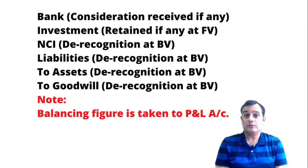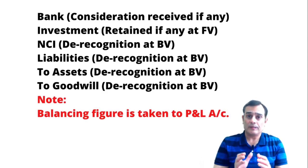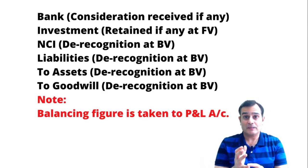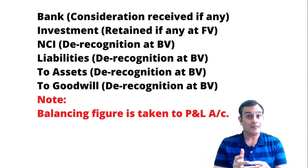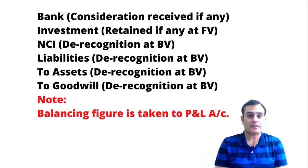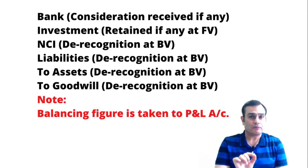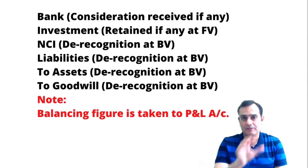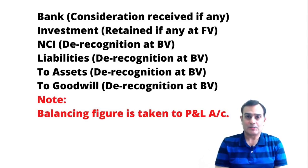This entry works in all permutation combinations. Whenever you see that there is a loss of control, try it in case of complete disposal, try it in terms of a partial disposal, try it even in terms of a deemed disposal. Remember, this entry works for consolidated financial statements. The calculation of profit or loss in terms of the separate financial statements would be different. That's all in this particular video.